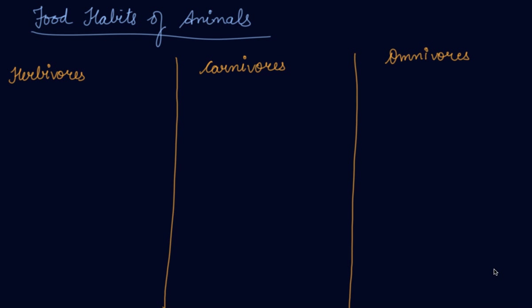Different animals eat different kinds of food. Their body parts are adapted to the kind of food they eat. So all human beings and different types of animals have different food habits.